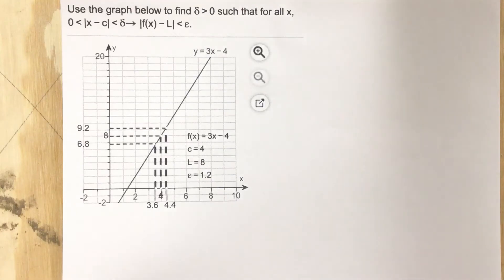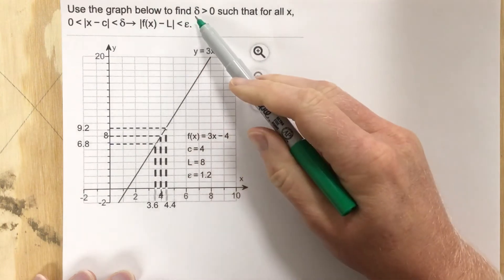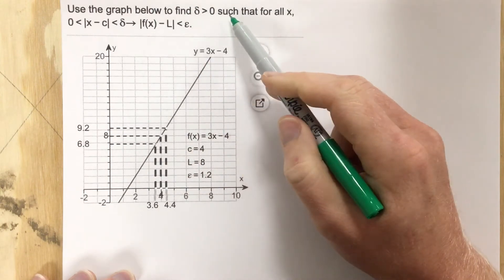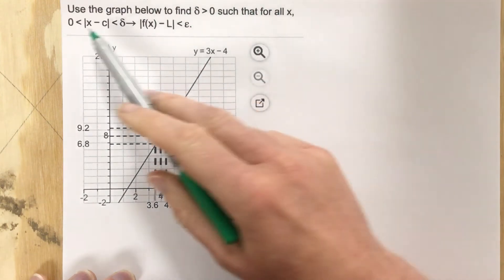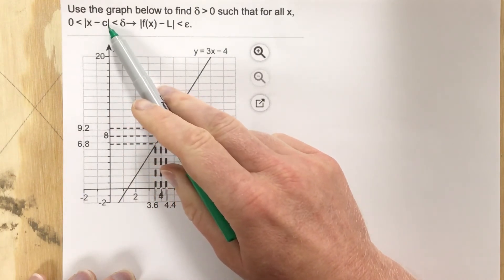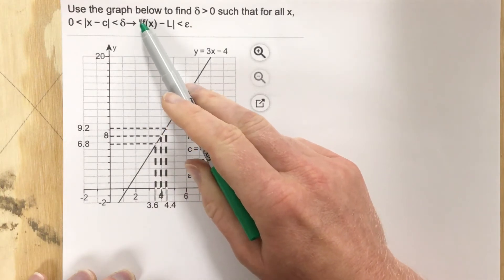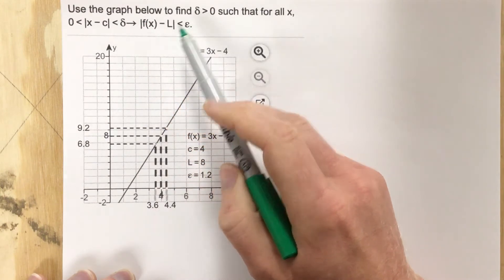This is problem number two for section 2.3. Use the graph below to find δ > 0 such that for all x, 0 < |x - c| < δ implies |f(x) - L| < ε.